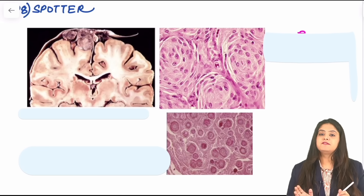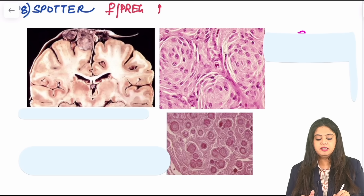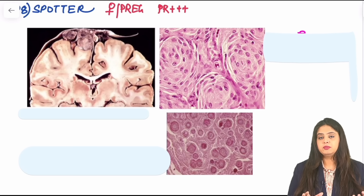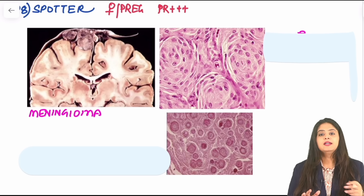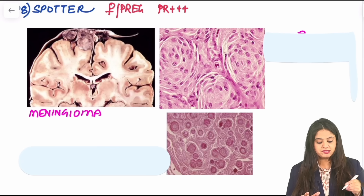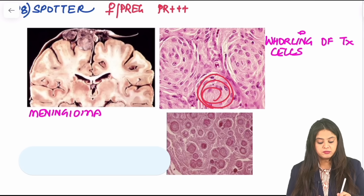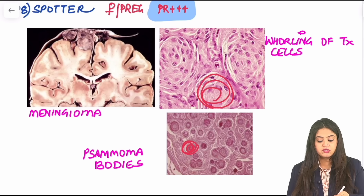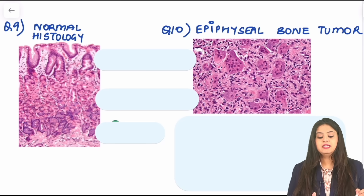Question 8, relevant for FMG exams: this is a brain tumor typically presenting in a female, often pregnant — because progesterone directly impacts this tumor. It arises from the meninges — this is a classical meningioma. The tumor cells are arranged in a whirling pattern, and calcium is also deposited in a round whorl pattern called psammoma bodies. Its association with progesterone-rich states like pregnancy is a key exam association.